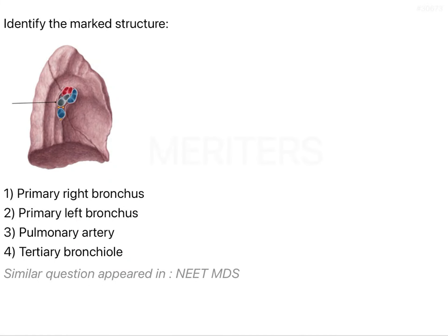Identify the marked structure. If you see this particular figure, this is your lungs. You will be able to understand that this particular structure is the fissure, and that is dividing the lungs into two lobes - one is your upper lobe and the second is your lower lobe.